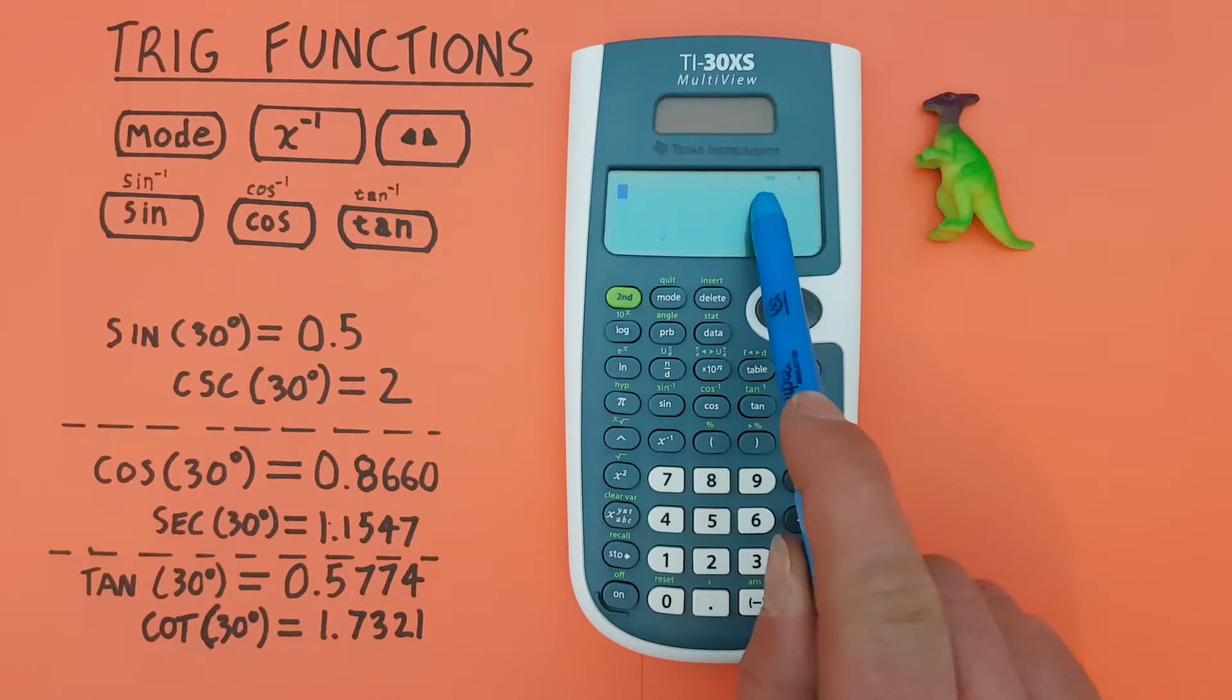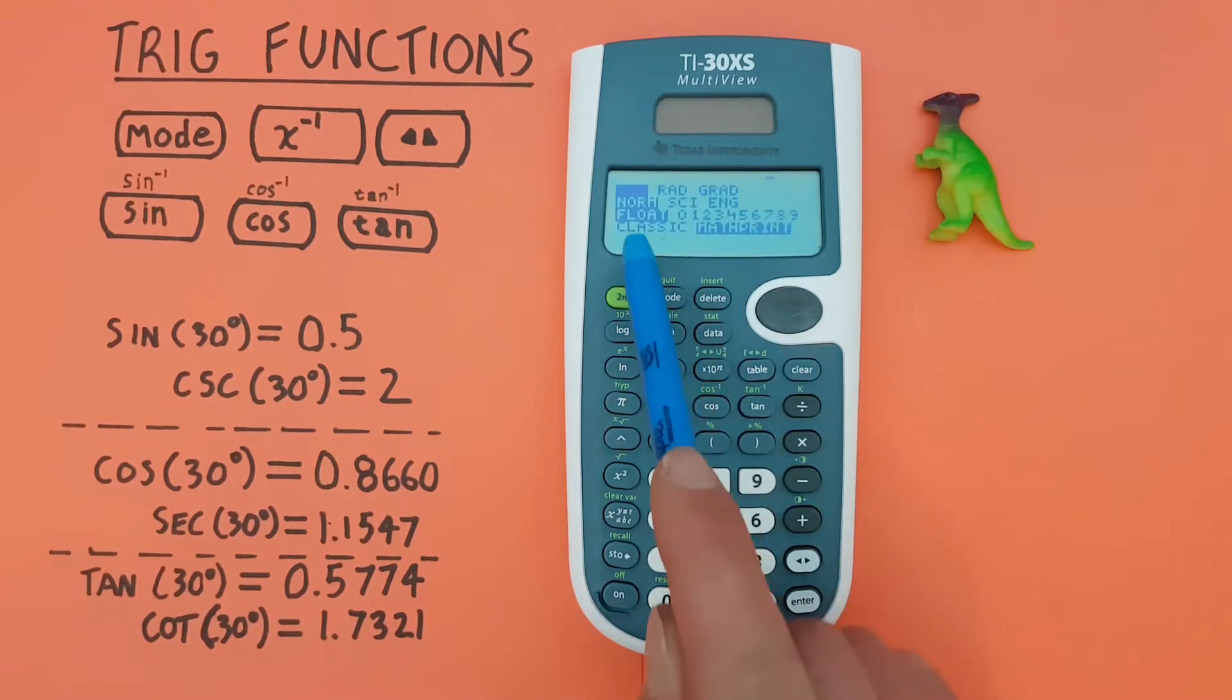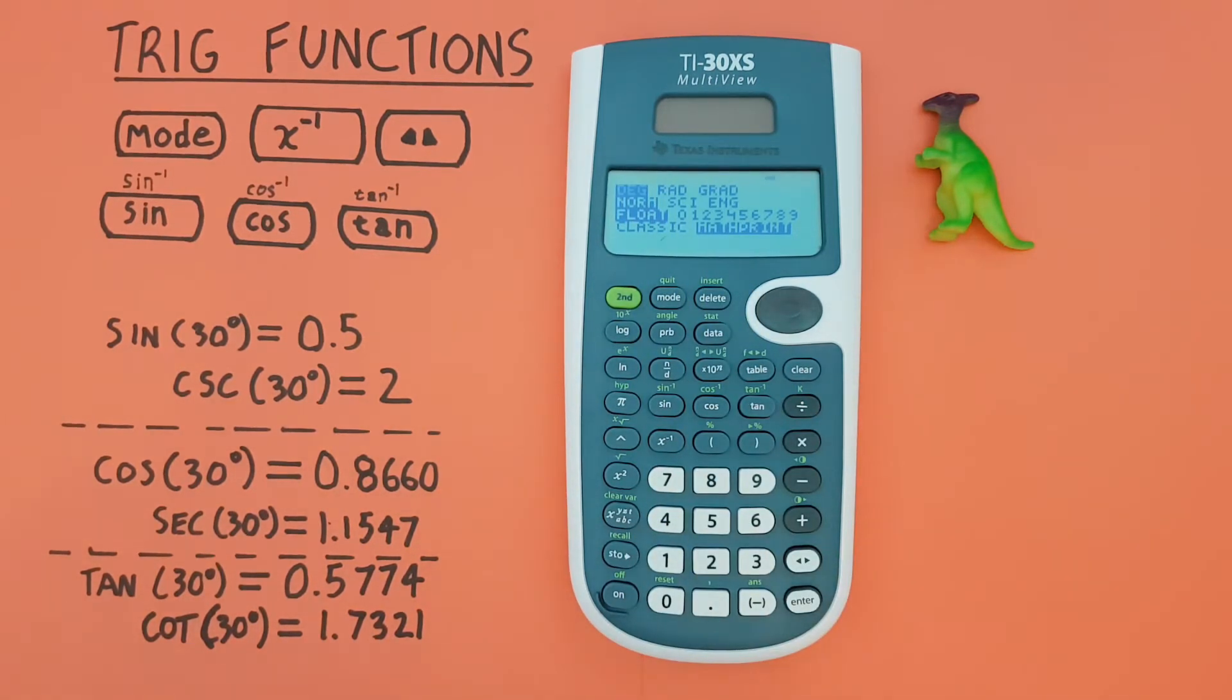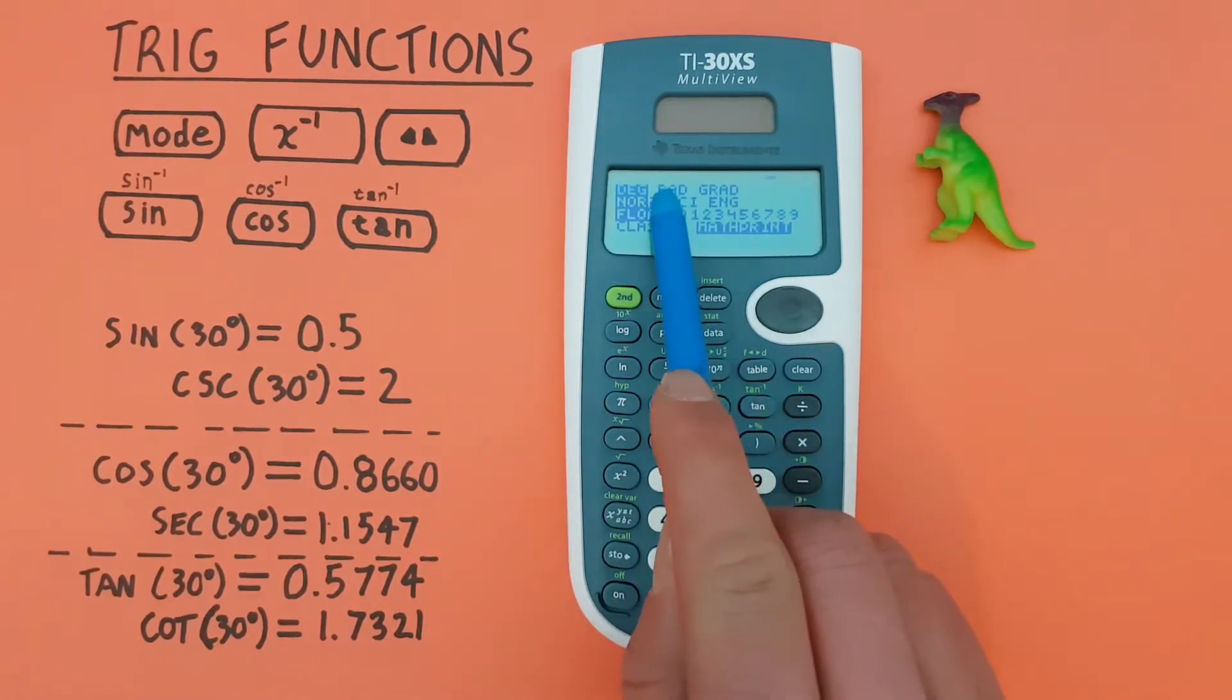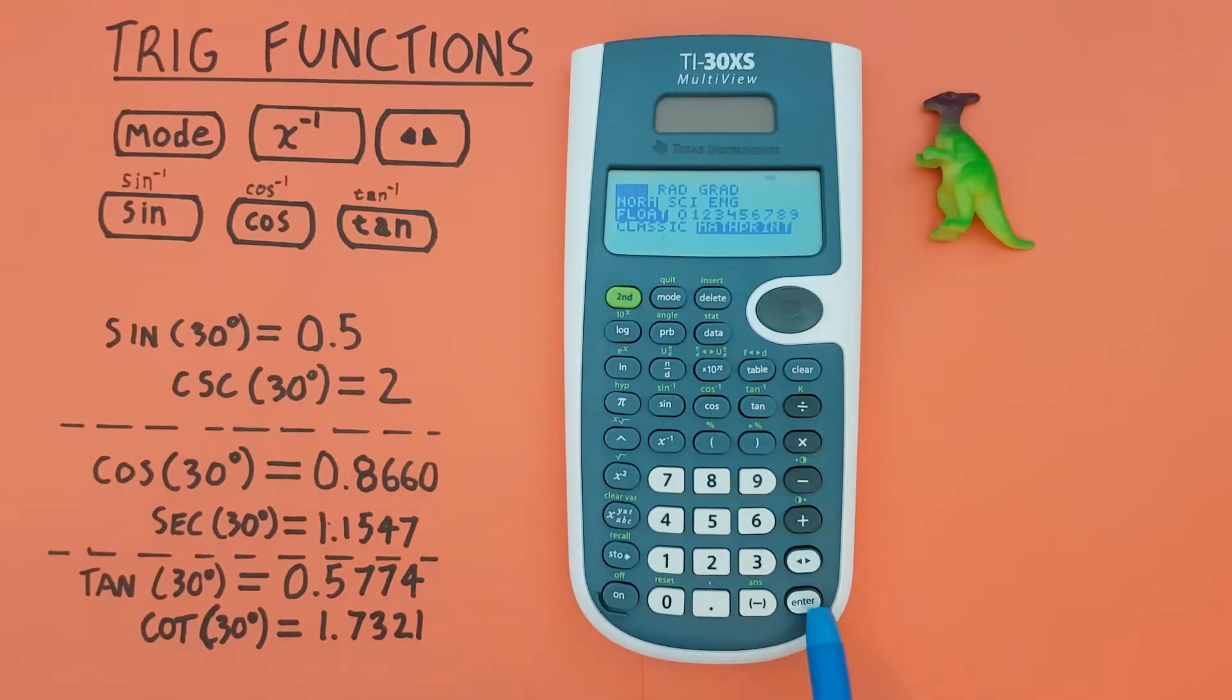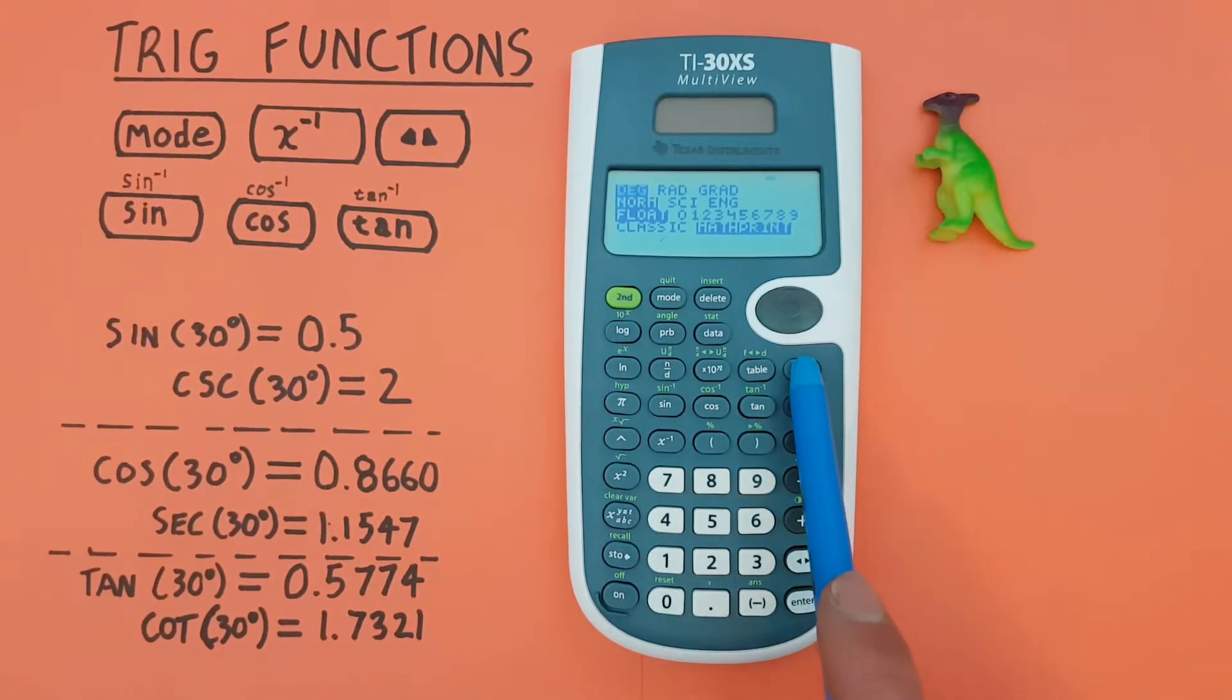You can change your mode by pressing mode, and then this top line has either DEG, rad, or grad for your different types of mode. If you're working in radians, you want to be in rad. If you're working in degrees, you want to be in DEG. So, we highlight DEG, press enter, and then we can clear out of this menu.